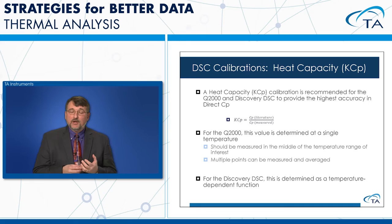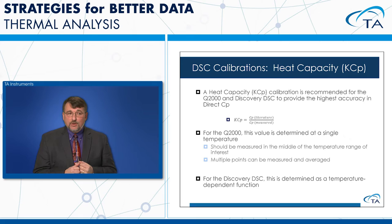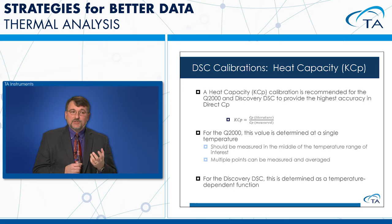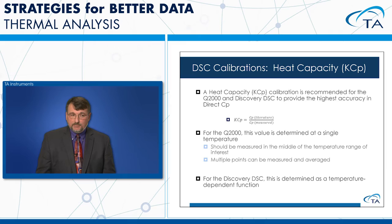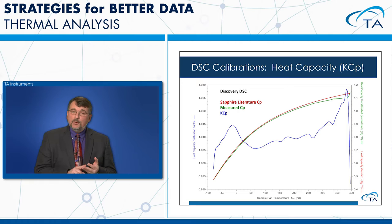The heat capacity calibration is used to get the direct value of heat capacity on a T0 DSC like the Q2000 or Discovery DSC. We take the literature value of heat capacity of a known material — typically sapphire — and compare it to what we measure. On the Q2000, we take a value at a single temperature and divide; on the Discovery DSC, we fit the whole curve as a temperature-dependent function for a better measurement. The measured curve for Discovery DSC matches the sapphire literature value very well.